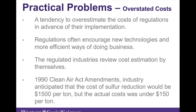The third challenge is the tendency to overestimate the cost of regulations in advance of implementation. Government tries to encourage new technologies and more efficient ways of doing business, so the market price of new technologies is not settled at the beginning, and firms have incentive to overstate their cost of adapting. The 1990 Clean Air Act amendments experienced this — industry anticipated the cost of sulfur reduction would be $1,500 per ton, but the actual cost was under $150 per ton. These three problems make cost-benefit analysis a less reliable approach to analyzing policies or regulations.